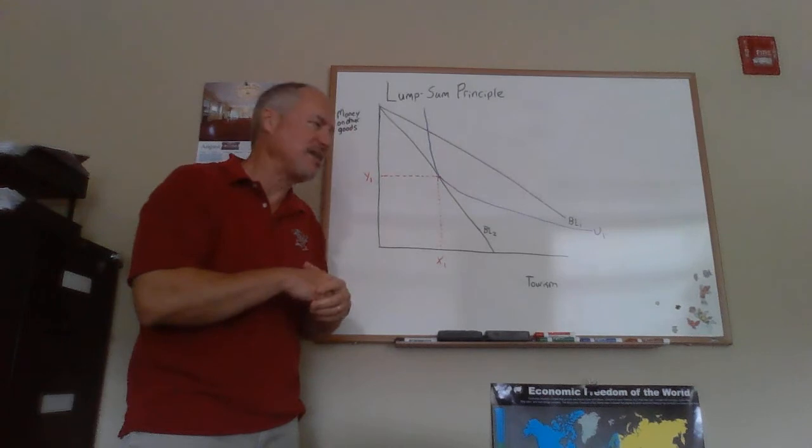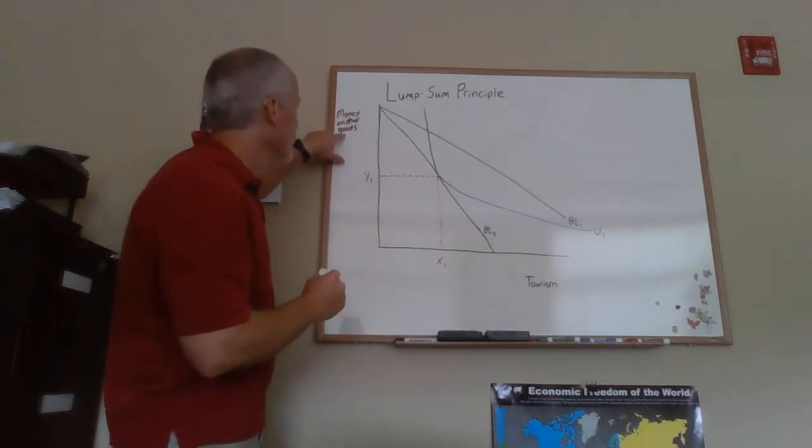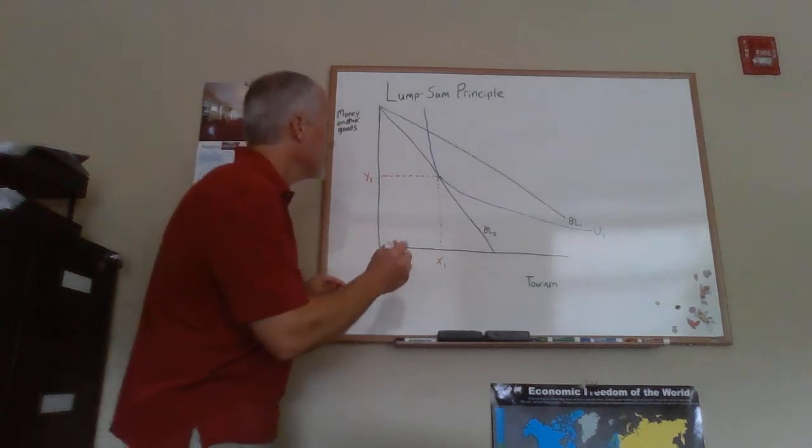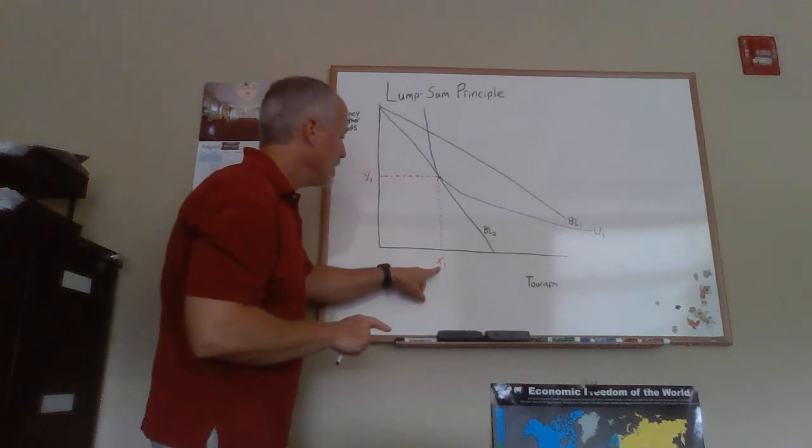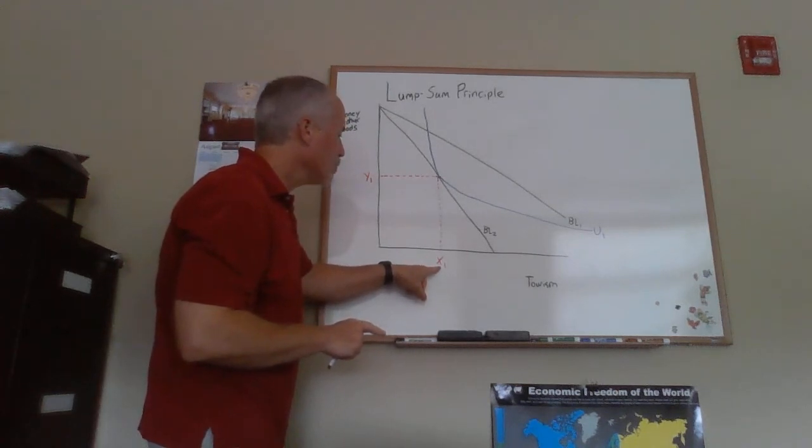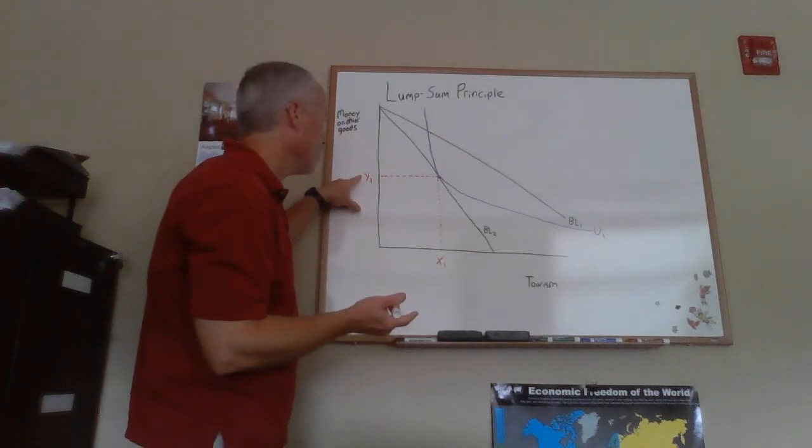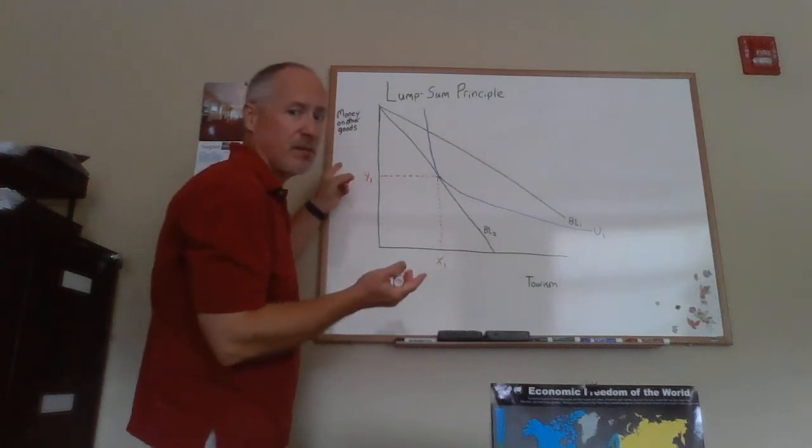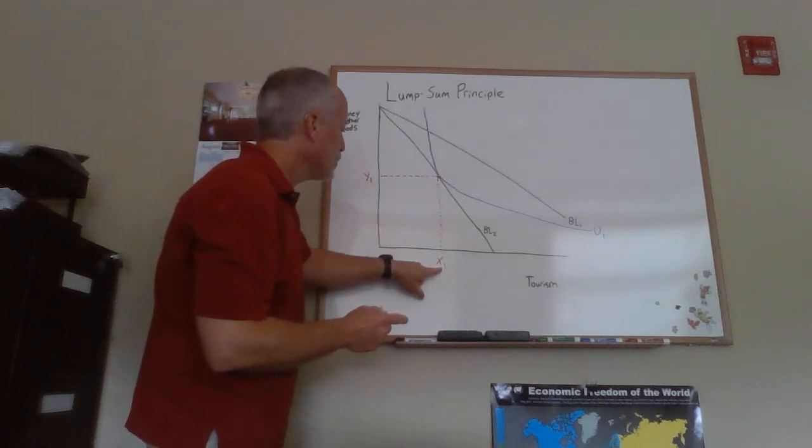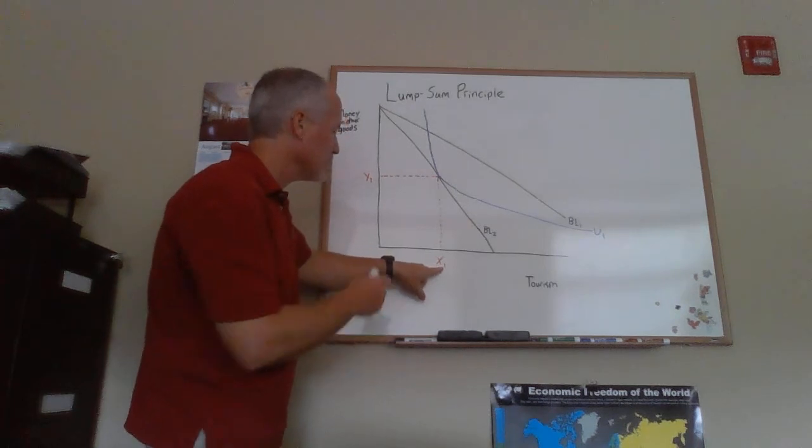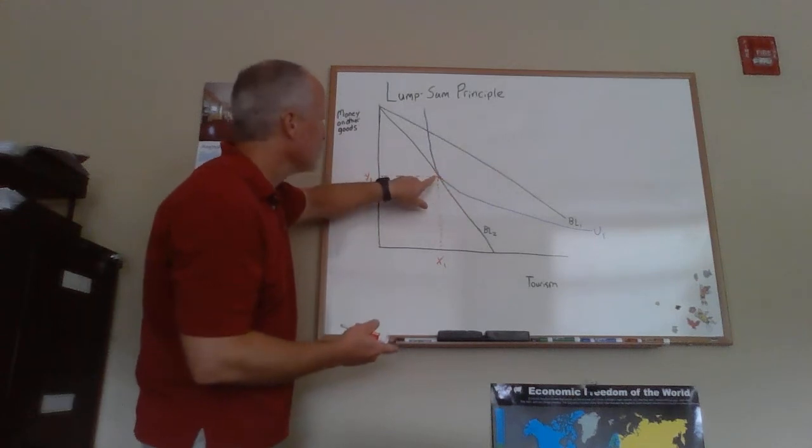How do we decide what would be a tax that would raise the same amount of money? Here's where we can use the fact we put money on other goods here. We can compare BL2 with BL1. If we look here, x1 is the amount of tourism and y1 is money spent on other goods. Suppose you were going to buy x1 of tourism with your original budget line before you had to pay the tax.